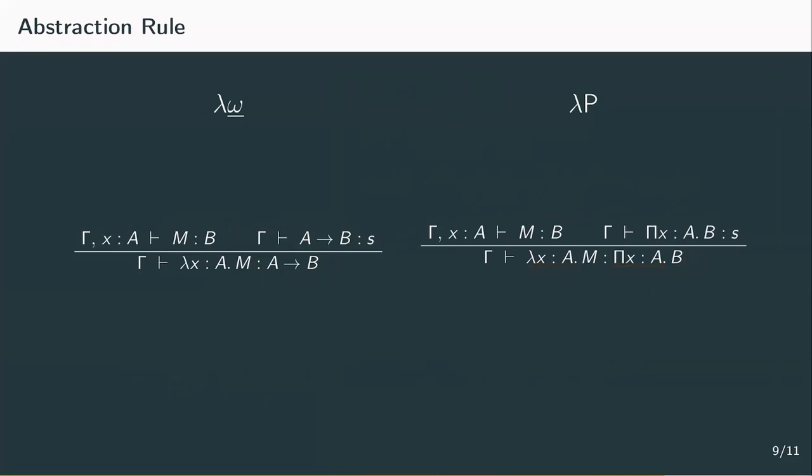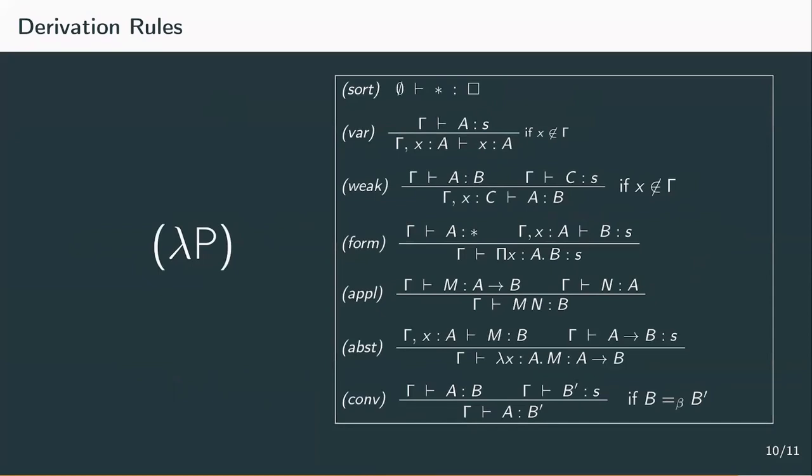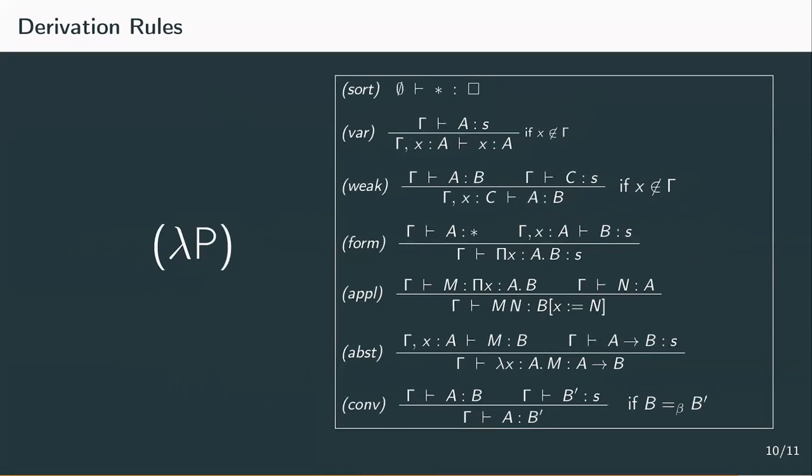So to get to the derivation rules of lambda P, we start with all derivation rules of lambda weak omega. And then we change the formation rule, the application rule, and the abstraction rule.